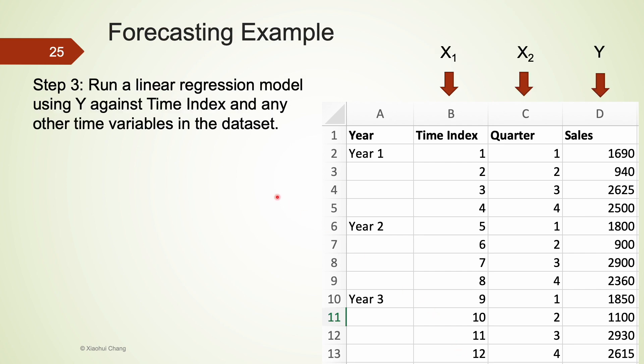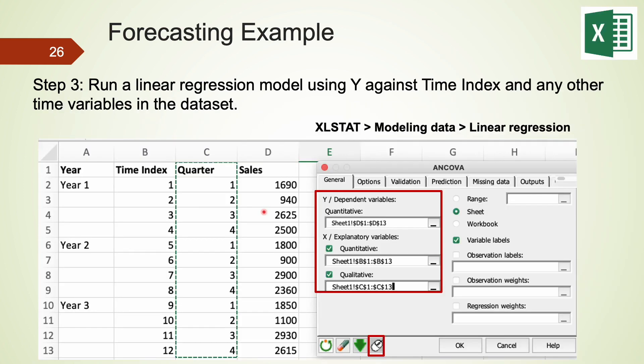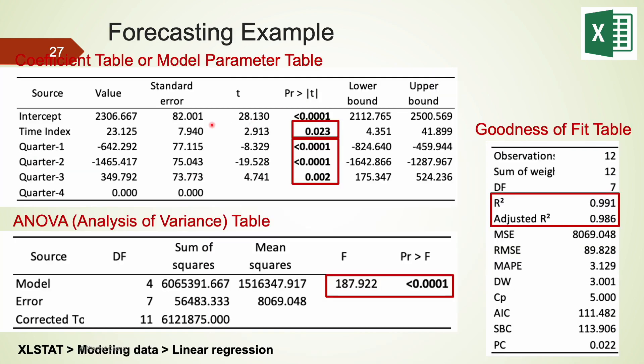After creating the time index variable, we now can run a linear regression model using y, that's the sales, against the time index variable we just created, and other time variables in this dataset. Because the data is quarterly data, I'm going to use quarter variable in column C in my regression. We now use xlstat to run a linear regression. For the explanatory variables, the quarter variable in column C should be selected as a qualitative or categorical variable. On the other hand, the time index variable we just created in column B should be selected as a quantitative or numerical variable. The coefficient table shows that there is a clearly quarterly effect on textbook sales as all p-values are very small. The time index variable is also very significant. Both the F test in the ANOVA table and R squared in the goodness of fit table also suggest that this model is highly useful.